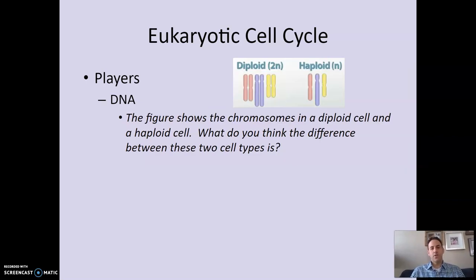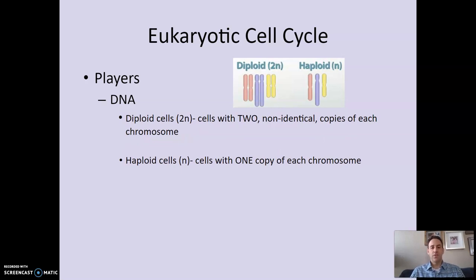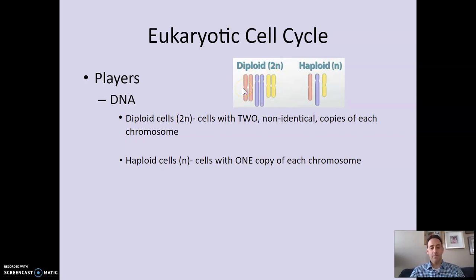The other thing about DNA you need to know are the terms diploid and haploid. A haploid cell has one copy of each chromosome. A diploid cell has two non-identical copies of each chromosome, called homologous chromosomes. You can see two reds, two blues, two yellows — not identical, one from mom and one from dad. We represent a diploid cell with the symbol 2N; in this example N equals three because there are three types of chromosomes.